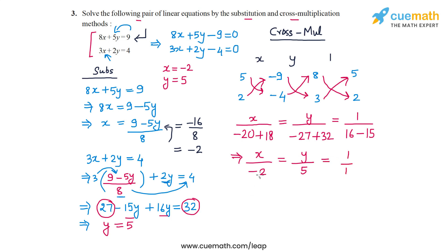And now if I compare the first and the third terms, I get x equal to minus 2, and if I compare the second and the third terms, I get y equal to 5. So the solution that we get is x equal to minus 2 and y is equal to 5, which matches the solution that we got using substitution.